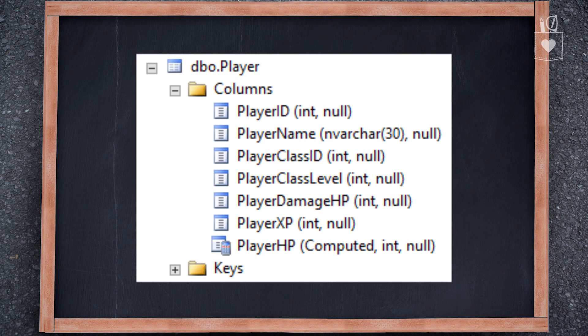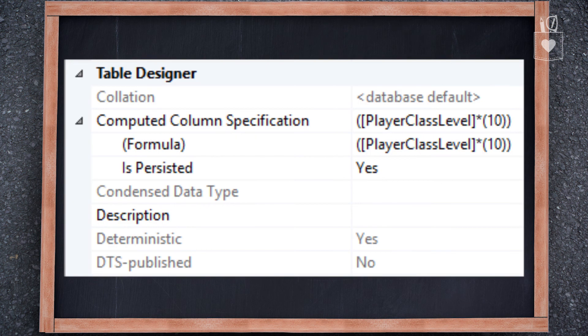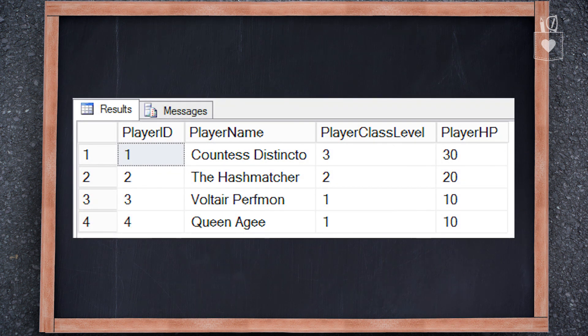Now let's take a look at what it looks like in Management Studio once it's already been established. You can see at the bottom we have our new playerHP column. It says it's computed, and there's even a little calculator symbol that goes along with it. If we look at the table designer, we'll see a few interesting things: our computed column specification or definition will be there, and it will say is persisted. Also down below, it tells us if it's deterministic or not. And if we go ahead and query that information, we'll see that our player hit points are indeed populated the way we expect them to be.